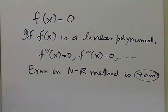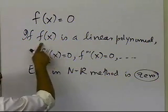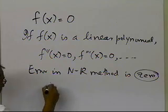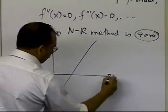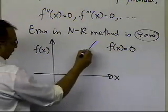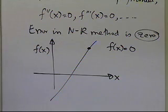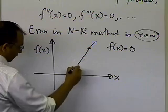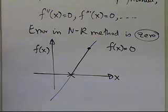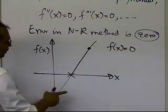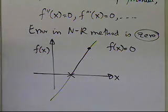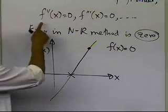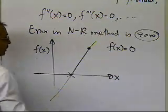Looking at Taylor's theorem, the error terms involve the second derivative, third derivative, fourth derivative — and if they are all 0 because f(x) is a linear polynomial, you get zero error in Newton-Raphson. This makes sense graphically too: if your function is a straight line, the tangent drawn from any initial guess will exactly coincide with the function itself, and within the first iteration you will find the root of f(x) = 0. So you need only one iteration, because all those higher derivatives are 0.